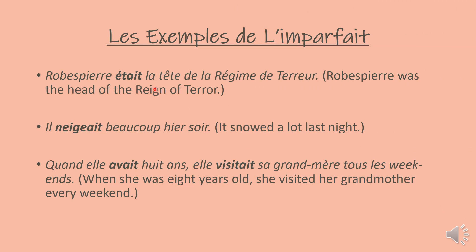Les exemples de l'imparfait. The first example is: Robespierre était la tête de la régime de terreur — Robespierre was the head of the reign of terror. We use imparfait here since the reign of terror lasted for a year. If it had been something that happened on a particular date, then we would have used passé composé. The next one is il neigeait beaucoup hier soir — it snowed a lot last night. A simple way to remember: for weather and for age, we usually use imparfait.